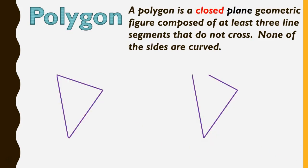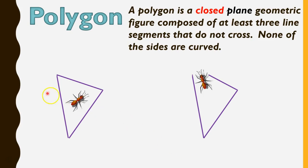Another important piece of information in our definition says that the polygon is a closed figure. Closed figure means that it looks like this — all the sides are touching. But this one over here is open. So this would be an open shape, but in order to be a polygon, it needs to be a closed shape. The best way I can think of to help you remember this is imagine there's a little ant inside of it. If it would be trapped inside, then it would be a polygon. If it could climb out, it is not a polygon — it's open.